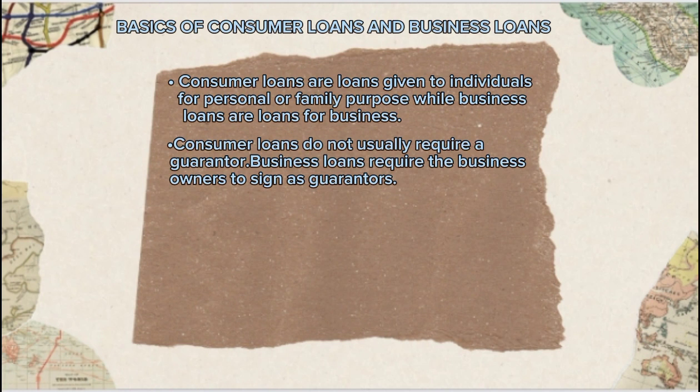Another difference: consumer loans do not usually require a guarantor, but business loans require the business owner to sign as a guarantor. This means that the consumer loan does not require a contract or guarantor to borrow money, but the business loan requires the signature of the owner and must be approved by the owner.